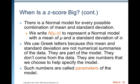There is a normal model for every possible combination of mean and standard deviation. We write N(μ, σ) to represent a normal model with mean mu and standard deviation sigma. That notation tells us the distribution is normal — unimodal and symmetric — with the first number always being the population or model mean and the second always being the standard deviation. We use Greek letters because this mean and standard deviation are not numerical summaries of data; they are part of the model — numbers we choose to specify it. Such numbers are called parameters of the model.